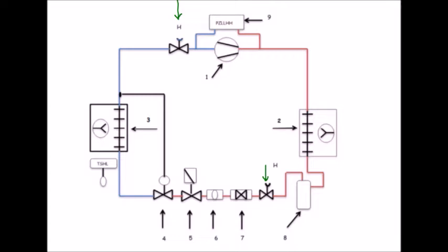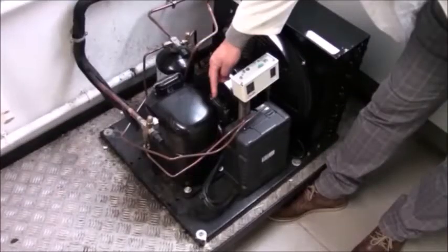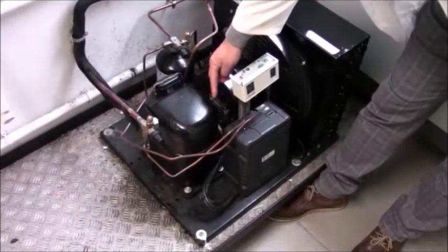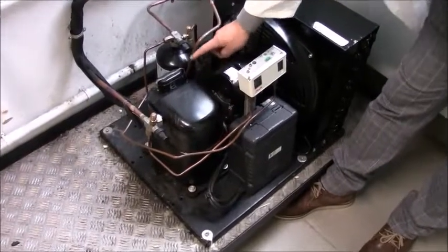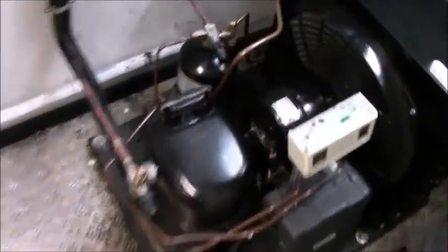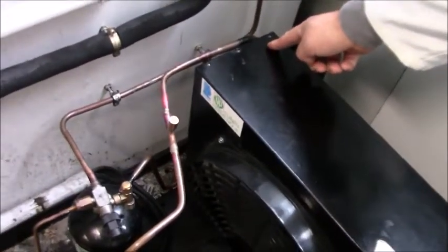À noter que nous avons deux vannes de service repérées avec la lettre H, mais aussi avec la flèche verte. Ce sont des appareils qui vont nous permettre de communiquer avec l'installation. Fixons ces différents équipements sur l'installation. Tout d'abord, nous avons ici le compresseur qui est le cœur de l'installation. Il permet de mettre en mouvement le fluide frigorogène. Le gaz qui sort du compresseur entre au condenseur et se refroidit via l'air extérieur.